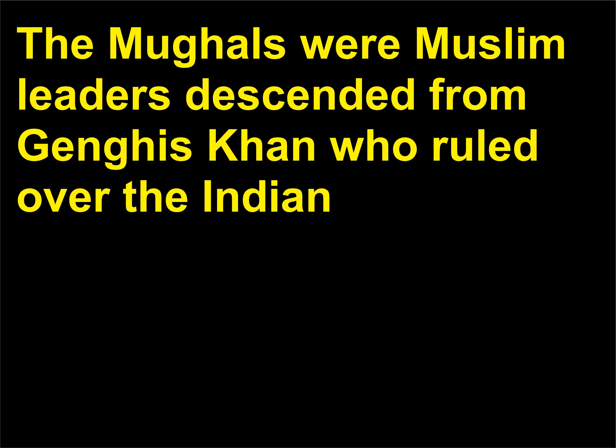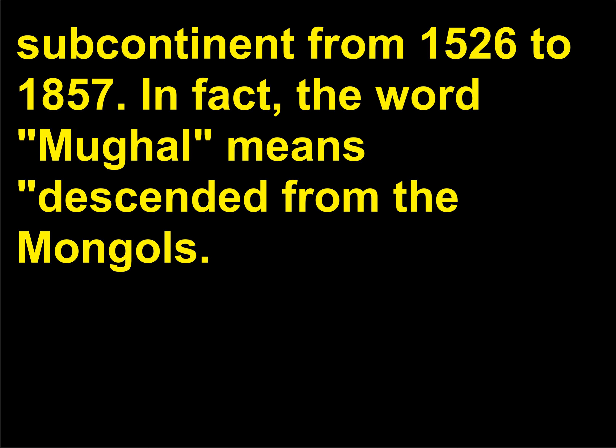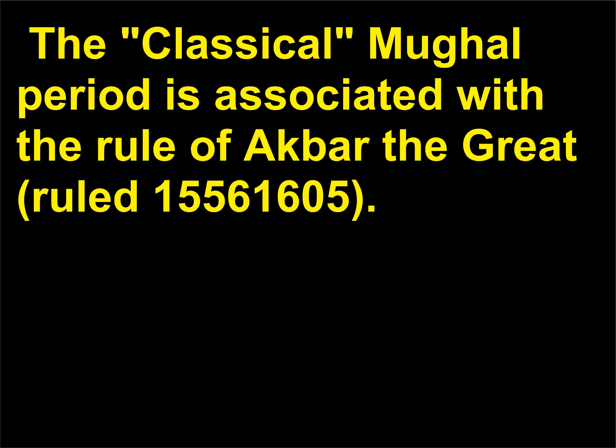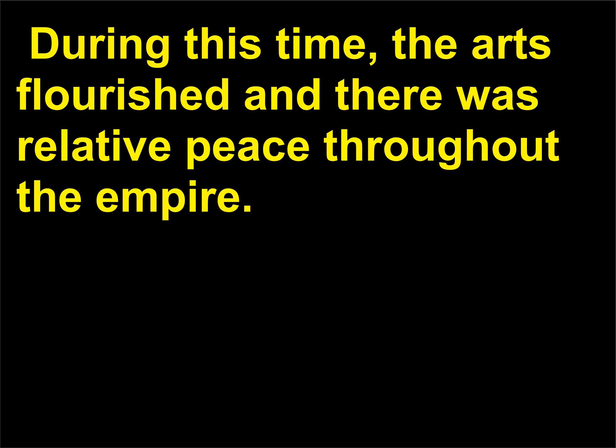The Mughals were Muslim leaders descended from Genghis Khan who ruled over the Indian subcontinent. In fact, the word Mughal means descended from the Mongols. At its peak, the Mughal Empire stretched from India to Afghanistan. The classical Mughal period is associated with the rule of Akbar the Great (ruled 1556–1605). During this time, the arts flourished and there was relative peace throughout the empire.